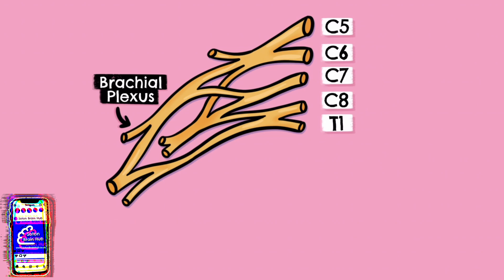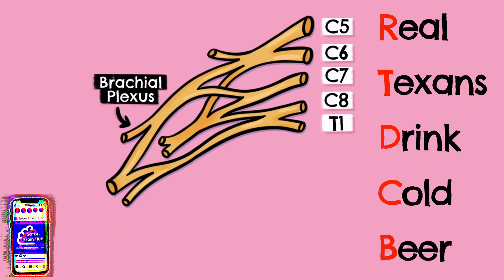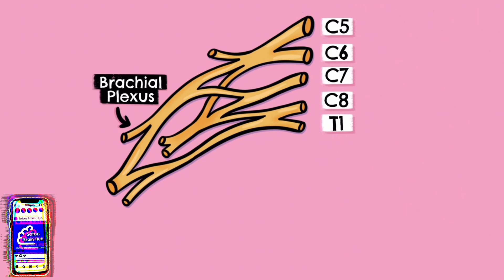This can be remembered by the mnemonic 'Real Texans Drink Cold Beer.' The plexus is ultimately divided into the lateral, medial and posterior cords which give off the different nerves of the upper limb.